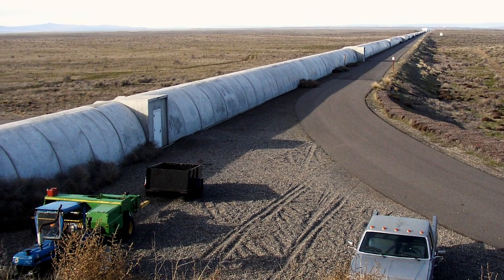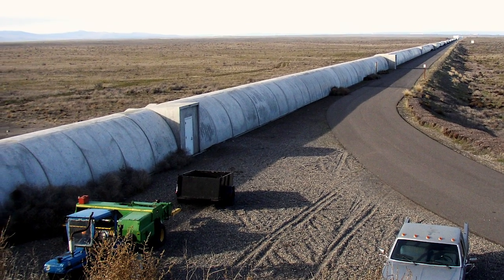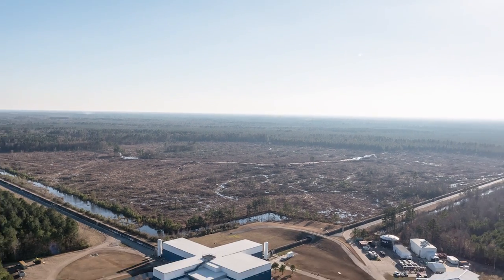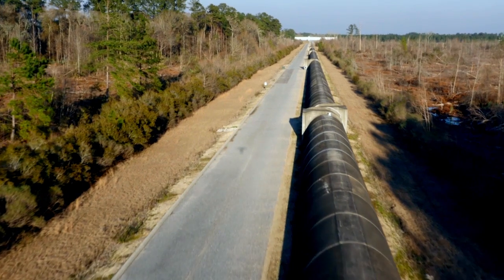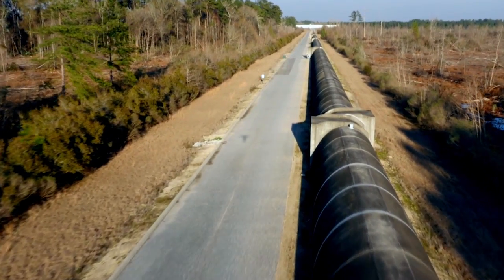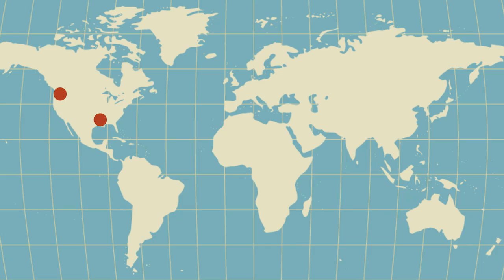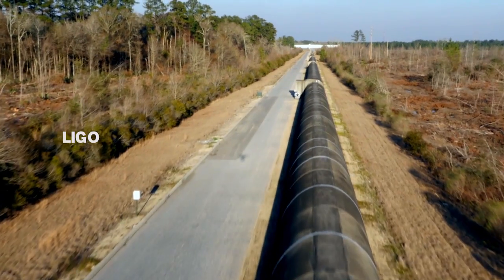To sense the waves, physicists use massive L-shaped optical devices called interferometers. Each arm of the L is 4 kilometers long. There are two of these devices in the United States, and together they make up LIGO.